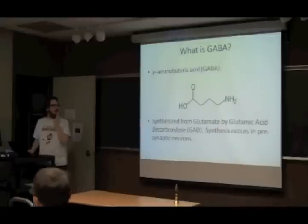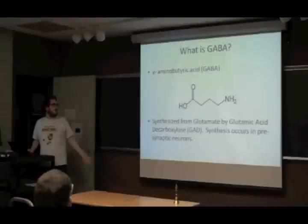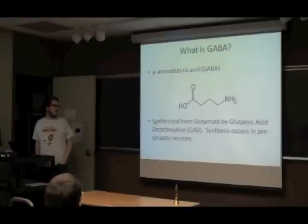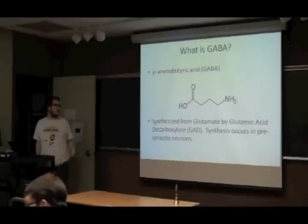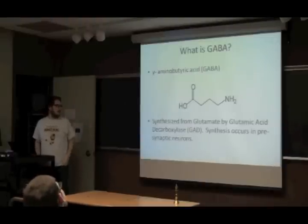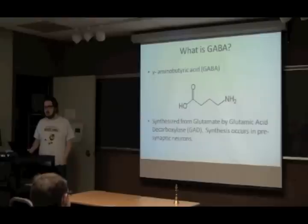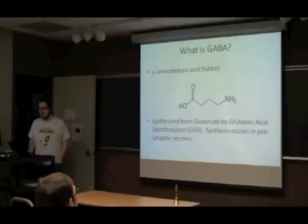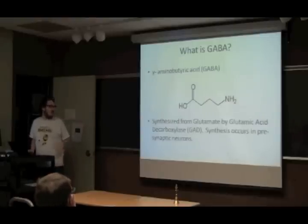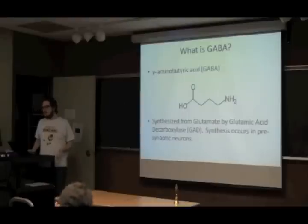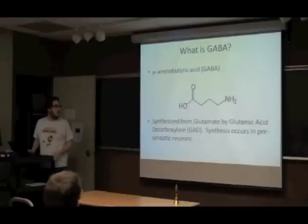So what is GABA? GABA is gamma-aminobutyric acid. It's made from glutamic acid, which is an amino acid, and it gets made in the neurons that it's going to be released from.